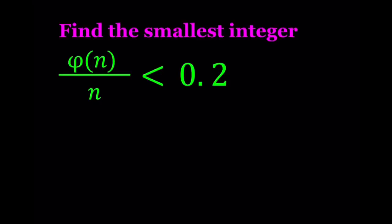Hello everyone. In this video, we're going to be solving a totient function inequality. We're supposed to find the smallest integer such that phi of n divided by n is less than 0.2.